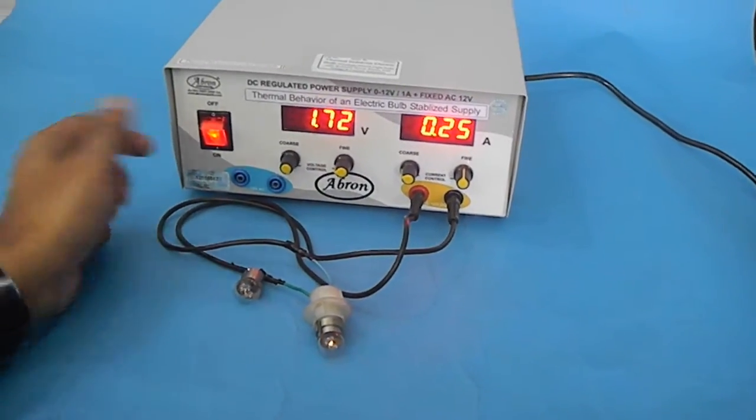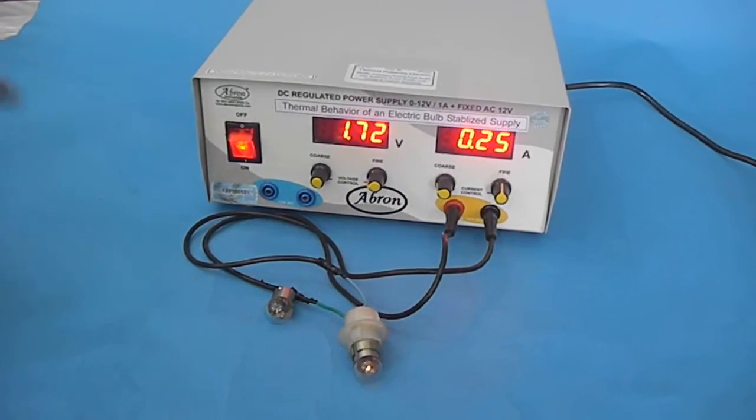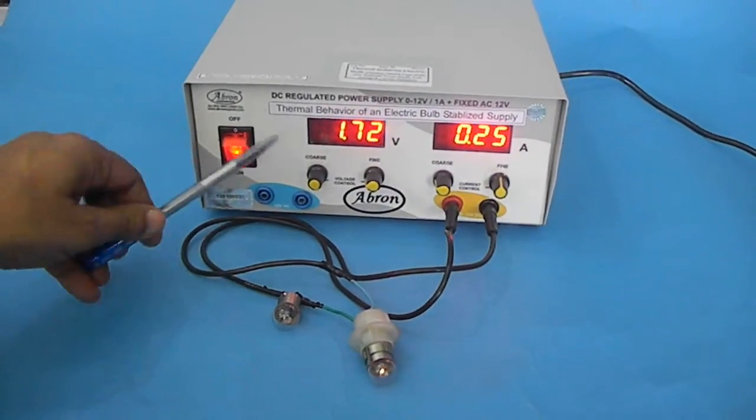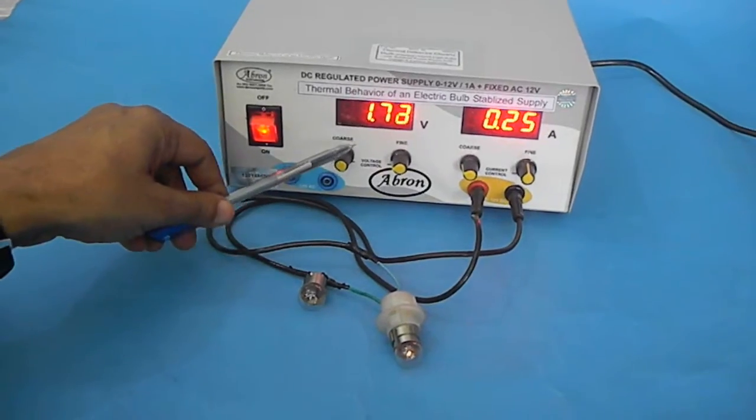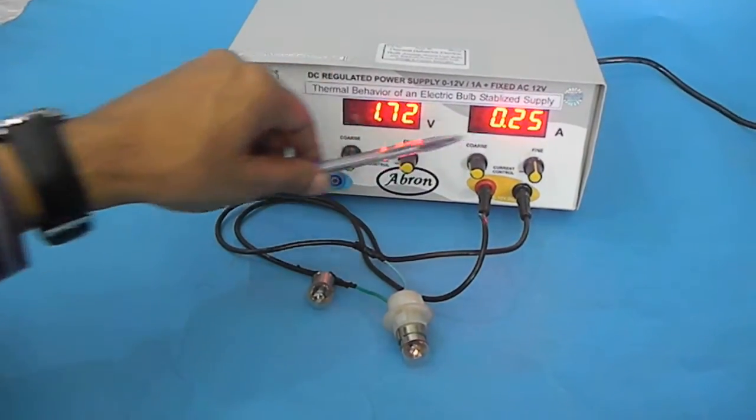Let us study this instrument for studying the thermal behavior of an electric bulb by Brown Export. It has a stabilized power supply where you can adjust both the voltage and current, limiting both parameters.